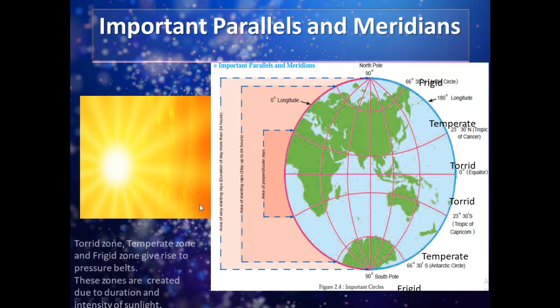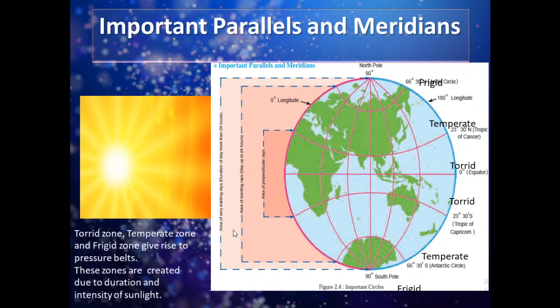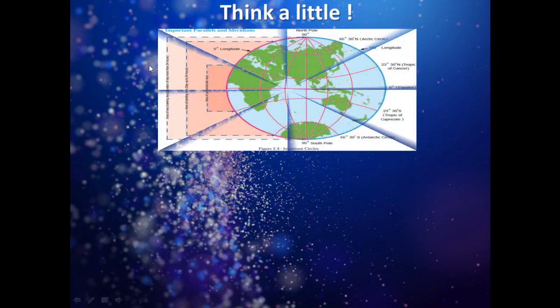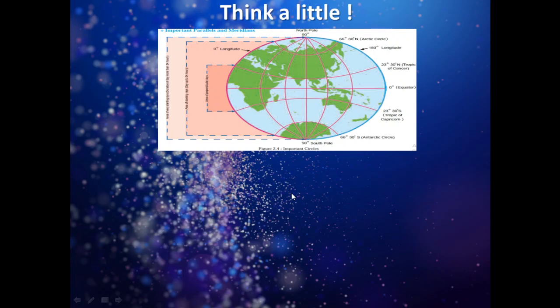Coming to the next point, the Torrid Zone, Temperate Zone, and Frigid Zone give rise to pressure belts. These zones are created due to the duration and intensity of sunlight. This is the image we have just learnt from our previous slide. Let's answer some questions. Which important parallel passes through India? India is shown here — the important parallel passing through India is the Tropic of Cancer.